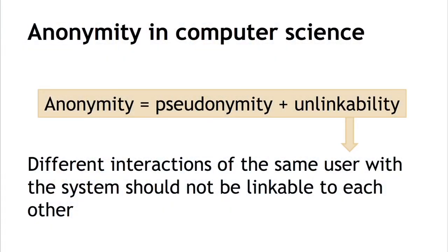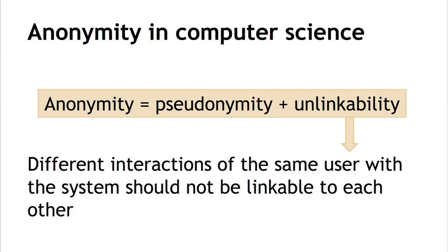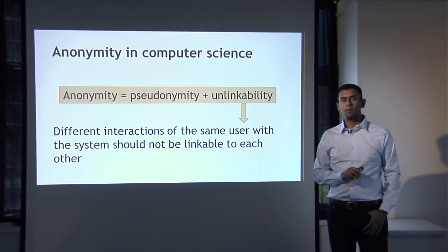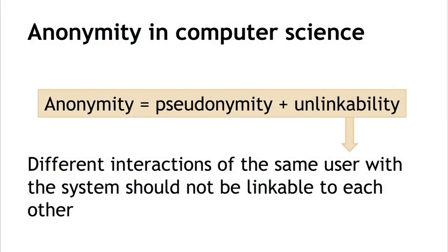Anonymity in computer science is just pseudonymity together with unlinkability. What unlinkability means at an intuitive level is that as a user interacts with a system repeatedly, these different interactions should not be able to be tied to each other from the point of view of some adversary. So you have to be talking about a specific adversary for this to even make sense.